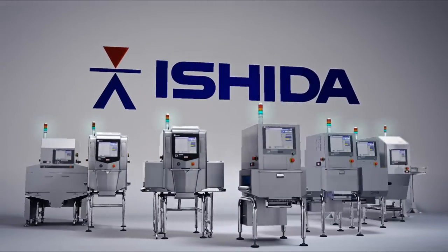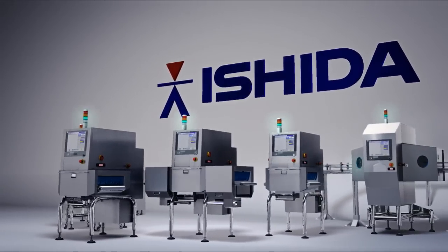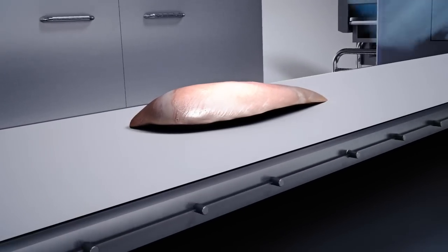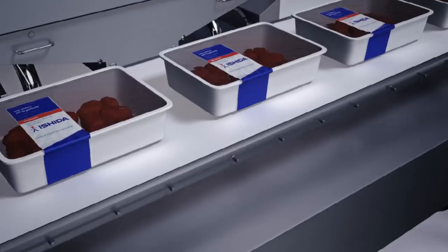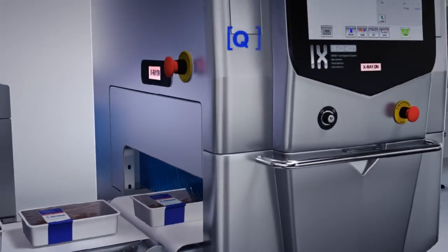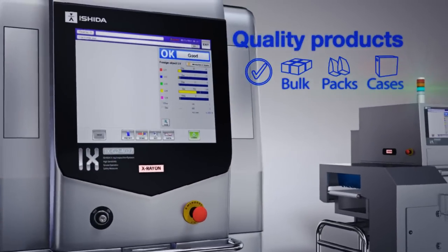Ishida has a wide range of specialist X-ray inspection systems. Whether you produce dry, chilled, fresh or frozen food products, and you package them in bulk, packs or cases, we can help to ensure the quality of all your products.